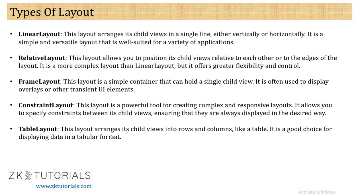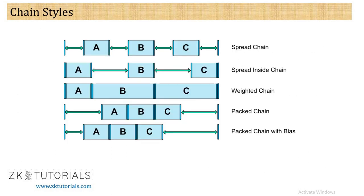We have seen how constraint layout works, and there are more things to cover. In constraint layout there is a concept called chain styles. So what are the chain styles? If we have A, B, C — three different views or widgets — we can arrange them without any separate coding or custom logic. With just a single click you can arrange them into your layout. There are five types: spread chain, spread inside chain, weighted chain, packed chain, and packed chain with bias.